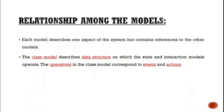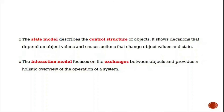The next topic is the relationship among the models. Each model describes an aspect of the system and contains references to the other models. The class model describes the data structure on which the state and interaction models operate. Operations in the class model correspond to events and actions. The state model describes the control structure of the object, while the interaction model focuses on exchanges between objects and provides a holistic overview of the operation of the system.